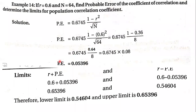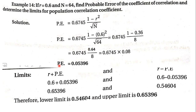Once you find out the probable error, you also need to find the limits — that is the range. It is like saying you have to score between a lower limit and an upper limit. You add and subtract the probable error from r to get that range for the population correlation coefficient.